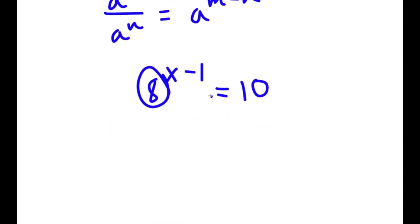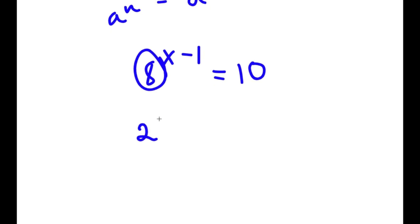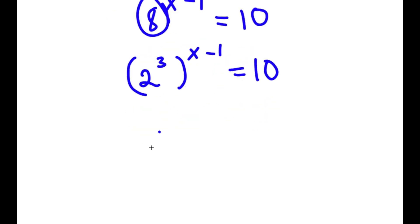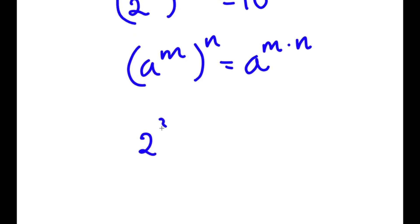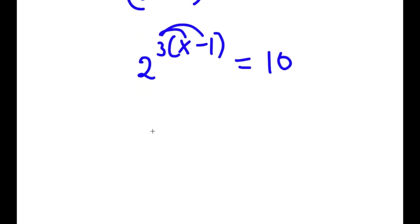Now 8 is the same as 2 to the power of 3, so I have (2³)^(x−1) equals 10. Using the power-of-a-power rule, a^m to the power of n equals a^(m times n), so this becomes 2^(3(x−1)) equals 10. Distributing the 3 gives 2^(3x minus 3) equals 10.